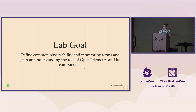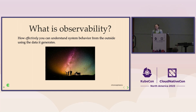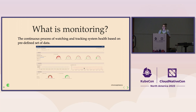So what is observability? You ask ten different people, you get ten different answers. I think it's how effectively you can understand your system behavior from the outside using the data it generates. Monitoring, on the other hand, is the continuous process of watching and tracking system health based on a predefined set of data. I think of monitoring as like having a smoke alarm in your house — it's checking for smoke particles and will alert you when it senses those in the air.